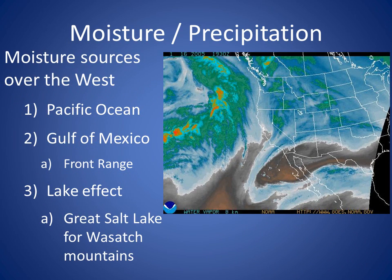Over the Intermountain region, the best sources of moisture are the Pacific Ocean and the Gulf of California between Baja California and Mexico. The Gulf of Mexico for the Front Range locations is very important, and we even have lake effect if you live around the Great Salt Lake near Salt Lake City.